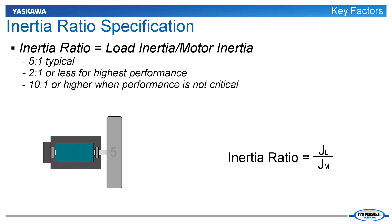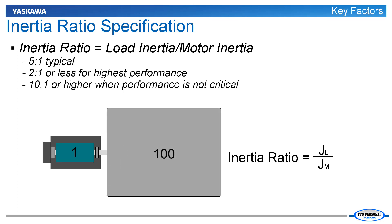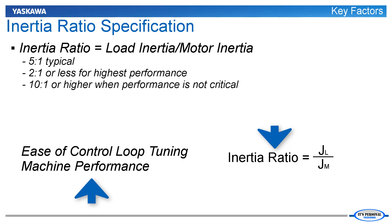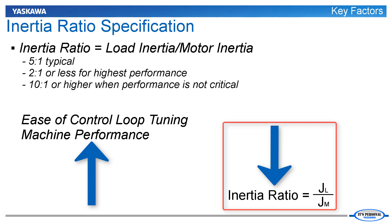Inertia ratios around 5 to 1 are typical for many applications. Performance tends to go up as the inertia ratio is lowered, often down to 2 to 1, 1 to 1, or lower. But when high performance isn't as critical, ratios of 10 to 1, 100 to 1, or even higher are not uncommon. In general, ease of control loop tuning and machine performance go up as the inertia ratio goes down. So if all other factors are equal, a lower inertia ratio is better.